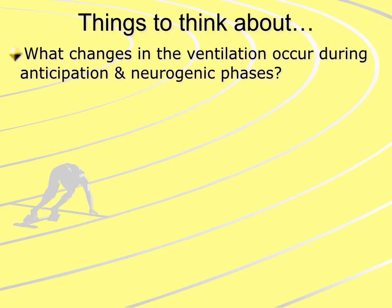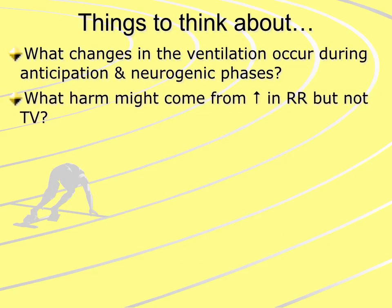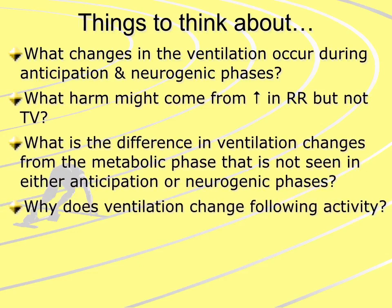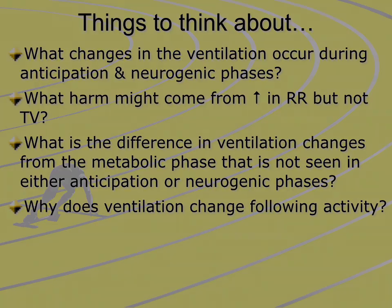Key questions to consider: What changes in ventilation occur during the anticipation and neurogenic phases? What harm might come from an increase in respiration rate without an accompanying increase in tidal volume? What is the difference in ventilation changes in the metabolic phase versus the anticipatory or neurogenic phases? And why does ventilation change following activity, and what does it mean?